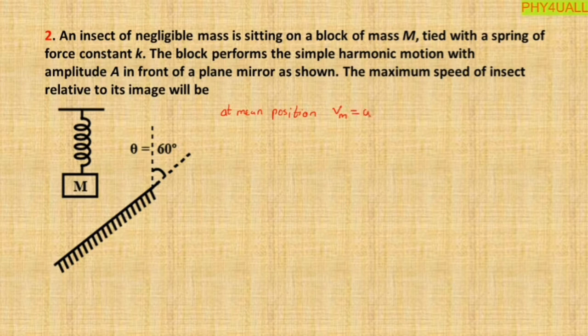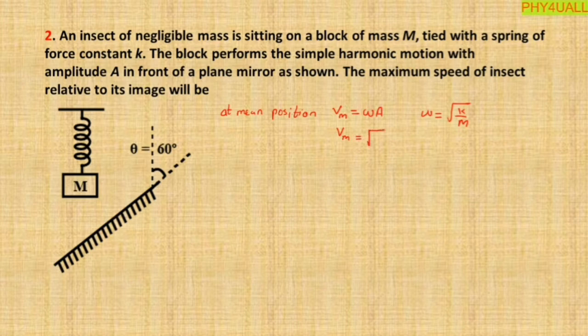At mean position, what is the maximum velocity? Let's call it Vm. Vm is equal to ω times A, amplitude A, where ω is equal to root of k by M. What does M represent here? Total mass - mass of the block and mass of the insect. But here the mass of the insect is negligible, so simply you can write it as mass of block, capital M. So the maximum velocity Vm equals root of k by M times A. This is the maximum velocity attained by the block as well as the insect.